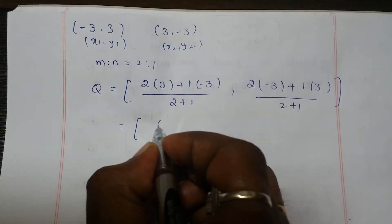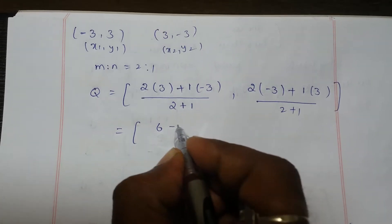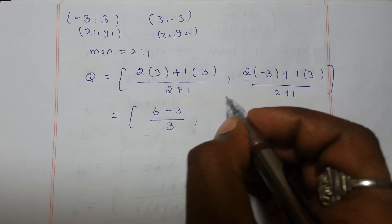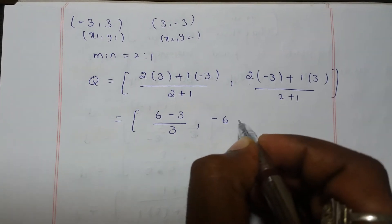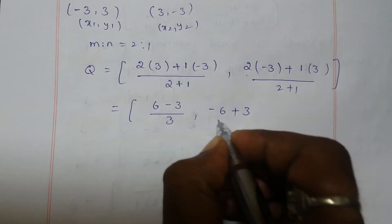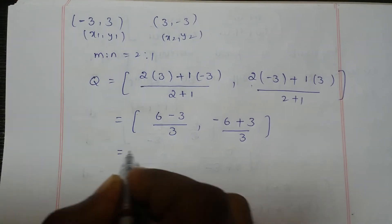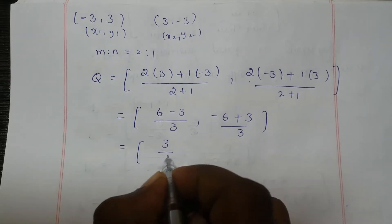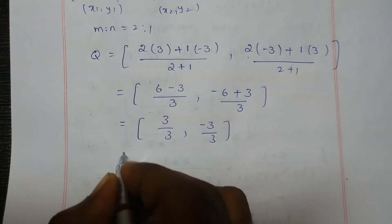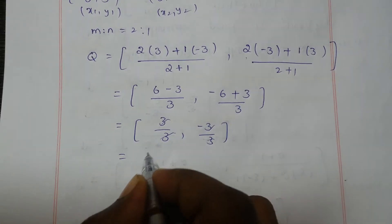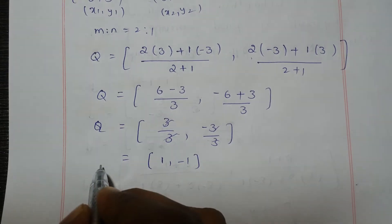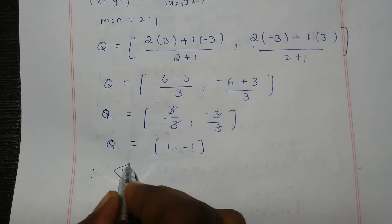Calculating: x-coordinate = (2×3 + 1×(-3)) / 3 = (6 - 3) / 3 = 3/3 = 1. y-coordinate = (2×(-3) + 1×3) / 3 = (-6 + 3) / 3 = -3/3 = -1. The 3s cancel, giving Q = (1, -1).